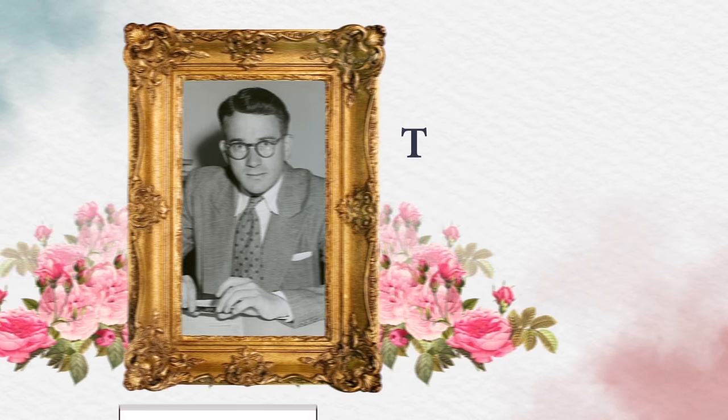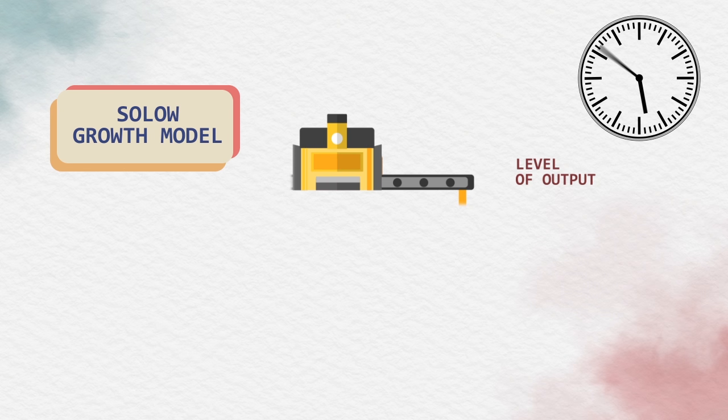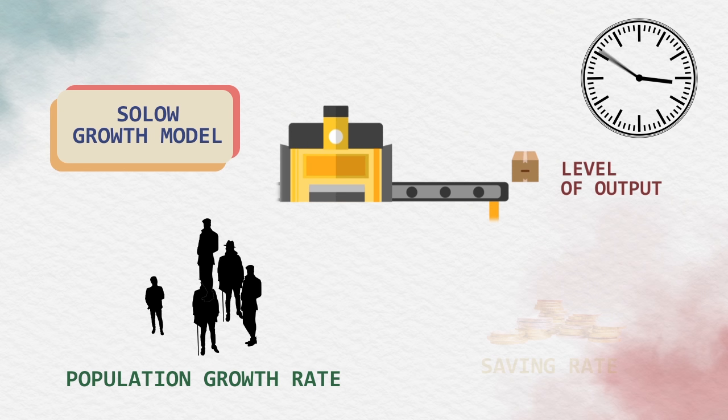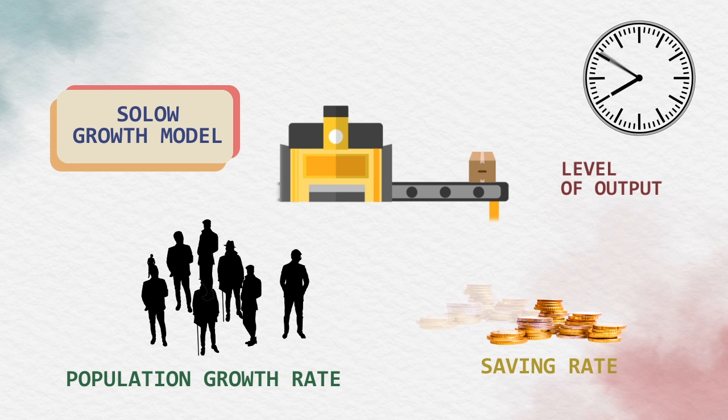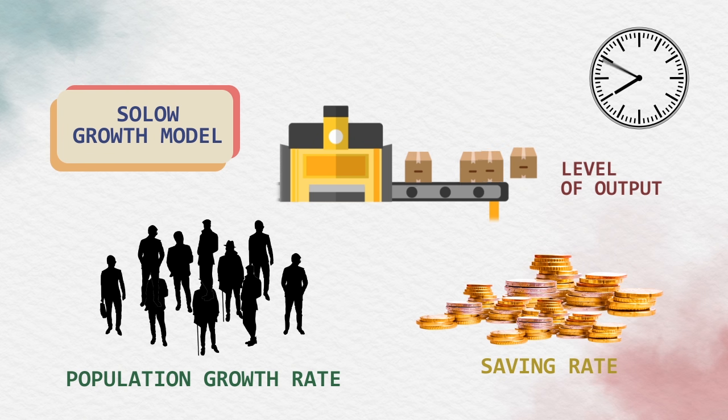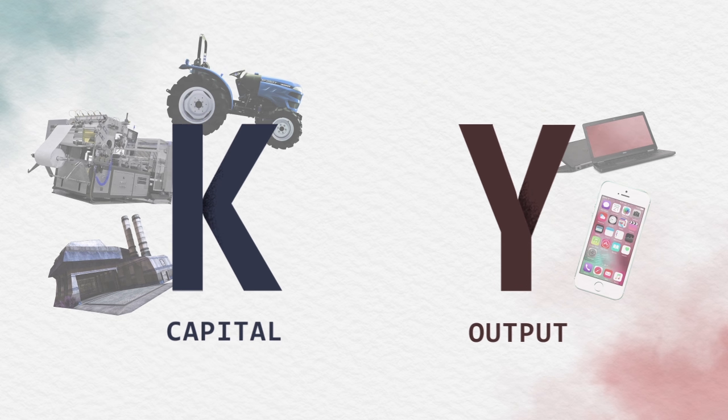Let's talk about the Solow growth model. The Solow growth model analyzes the change in the level of output in an economy over time, which results from changes in the population growth rate and the saving rate. First, we're going to start discussing the relationship between capital and output.